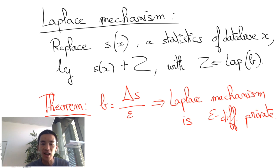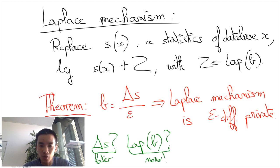But what's delta S and what's a Laplacian noise of parameter B? We'll get to delta S later on. For now, let's focus on this Laplacian noise.